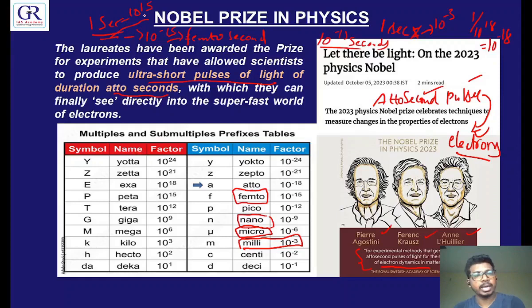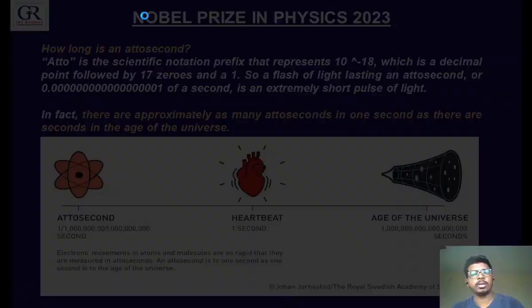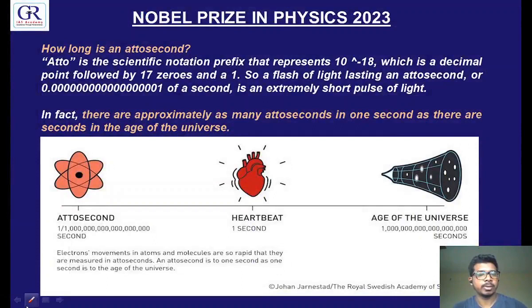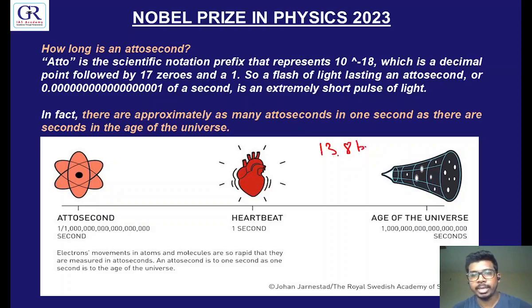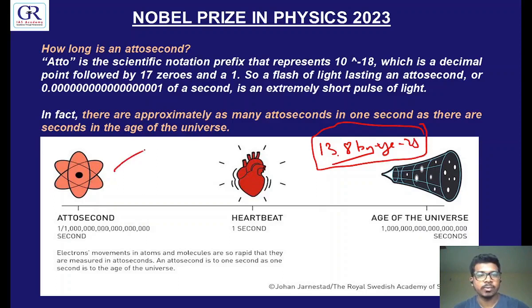To make you understand how small an attosecond is: the universe was born 13.8 billion years ago. There are as many attoseconds in one second as there are seconds in the entire age of the universe — 13.8 billion years. That much small an attosecond is. But we are now able to produce these attosecond pulses of light, thanks to the work of the Nobel Laureates.